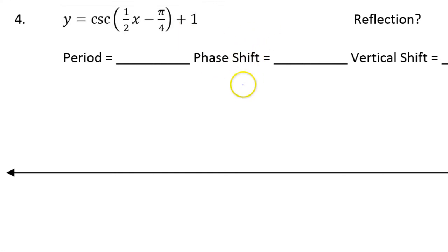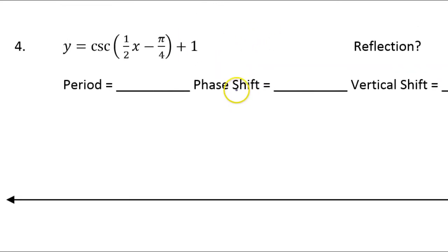The first thing I would do is rewrite this equation. Whenever you have a B value and a phase shift, you need to factor out the B value. I'm going to put that 1 half in the front, and that's going to leave x minus something that's not pi over 4. To figure out what goes here, I need to take that pi over 4 and divide it by the B value, divide by 1 half.